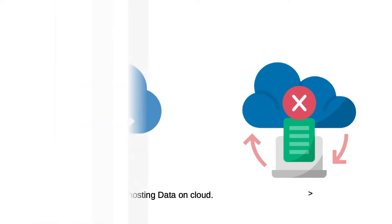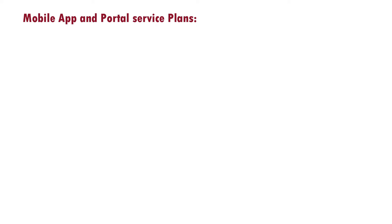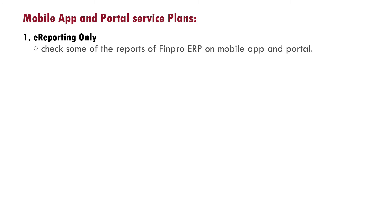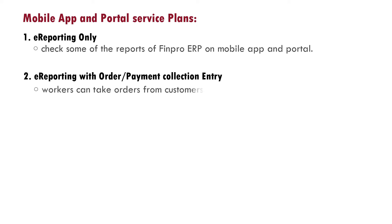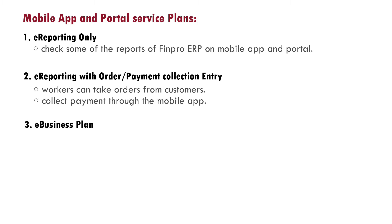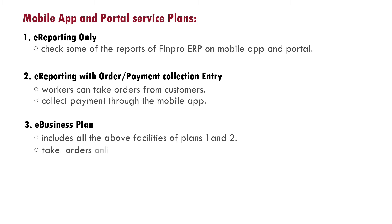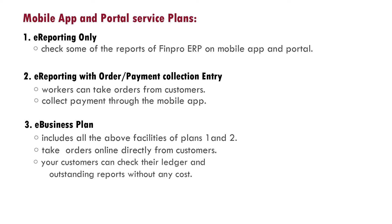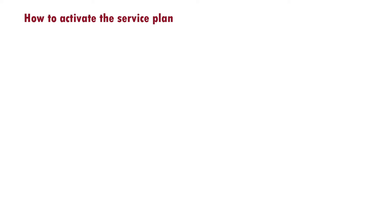For those who are new to Finpro portal and mobile app services, you may choose different service plans as per your needs. Such as: e-reporting only, where you can check some of your reports on your mobile app and portal; e-reporting with order and payment collection entry, where your staff can take orders or collect payments through the mobile app; and the e-business plan, which includes all features of both plans plus the ability to take orders directly from customers online, and customers can check their ledger and outstanding reports.